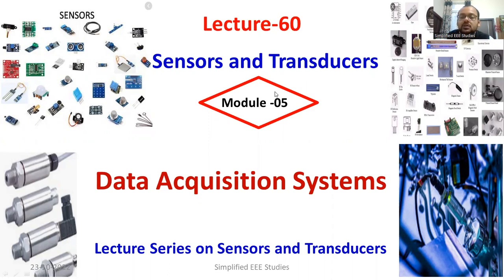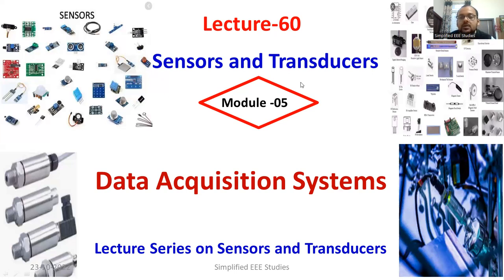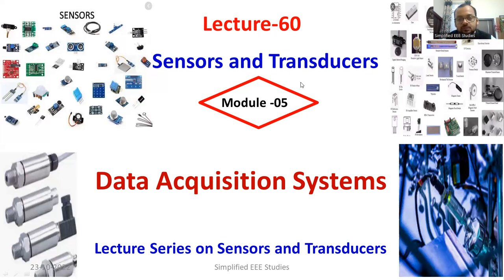Sensors or transducers are devices that convert one form of energy to another form of energy. Once we get the output from the transducer or sensor, that signal will be converted into the desirable form. For example, some certain amplification will be given, and in some cases attenuation will be provided. By using a signal conditioning device, we can provide amplification or attenuation. That is what we discussed in the previous session.